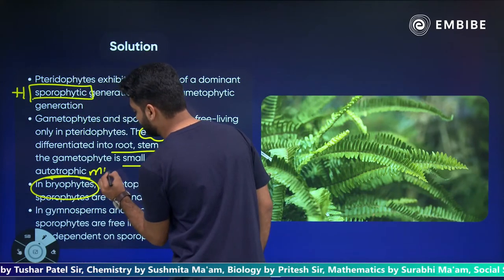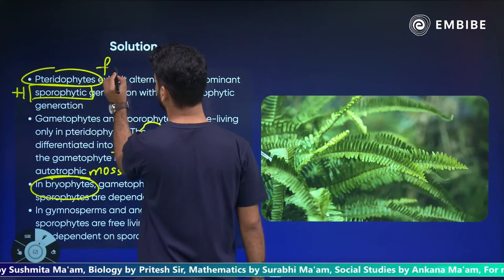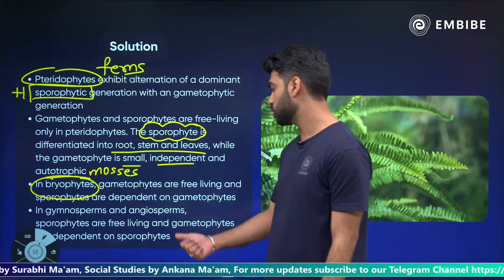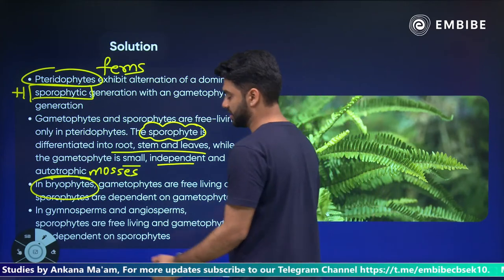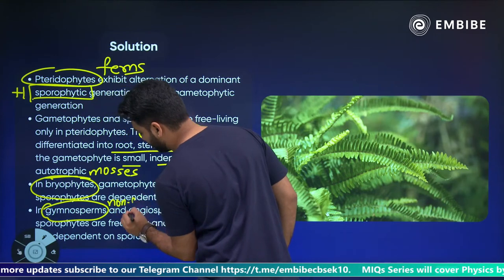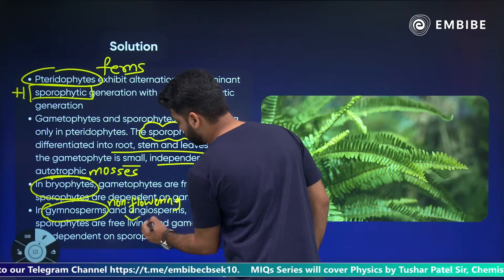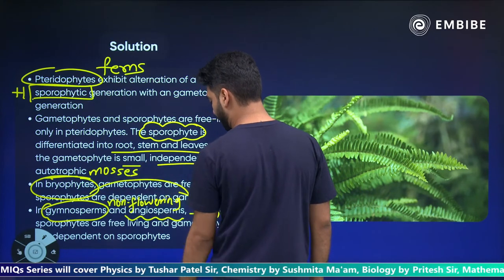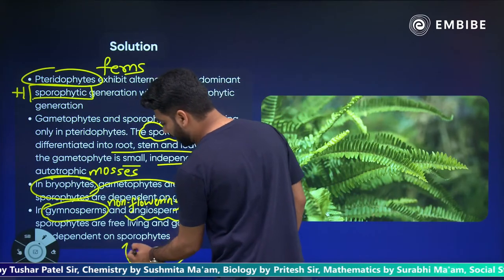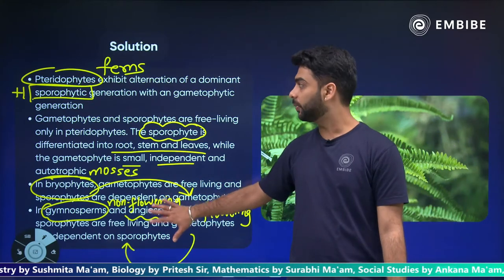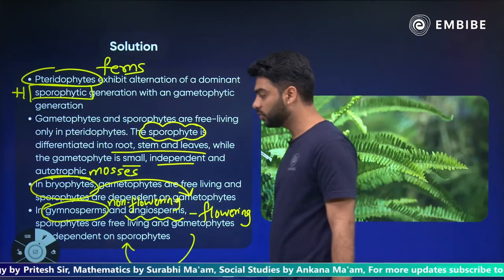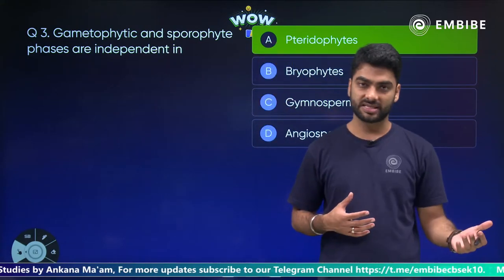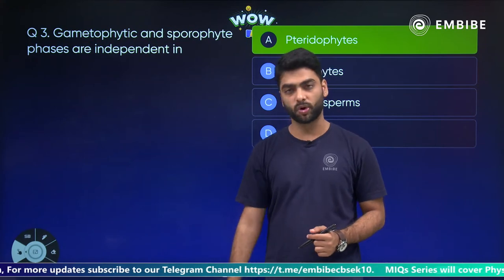Bryophytes mein aate hain aapke mosses, pteridophytes mein aate hain ferns. In Bryophytes, gametophytes are free-living and sporophytes are dependent on gametophytes. In Gymnosperms and Angiosperms, sporophytes are free-living and gametophytes are dependent on sporophytes. Gymnosperms are non-flowering and angiosperms are flowering. That is why, according to this explanation, pteridophytes are the correct answer — they have independent gametophytic and sporophytic phases.